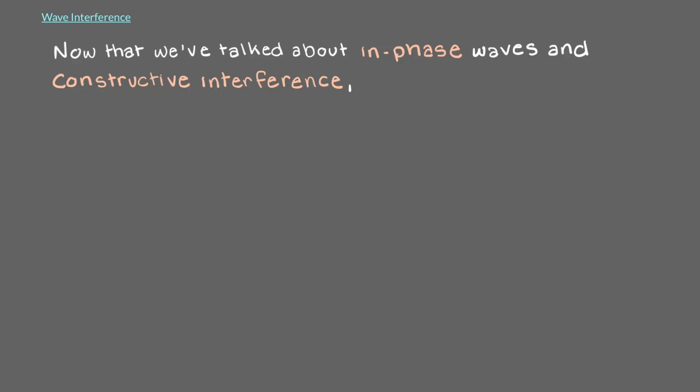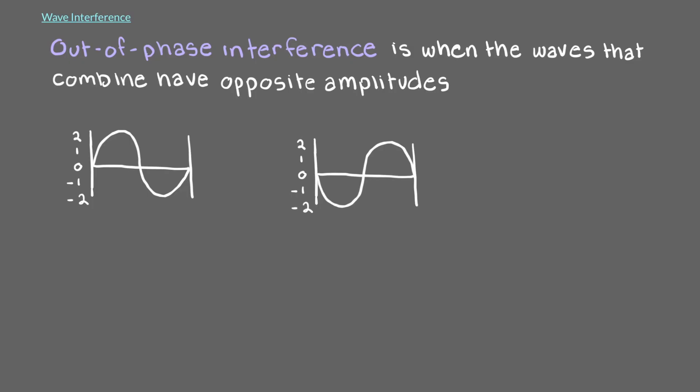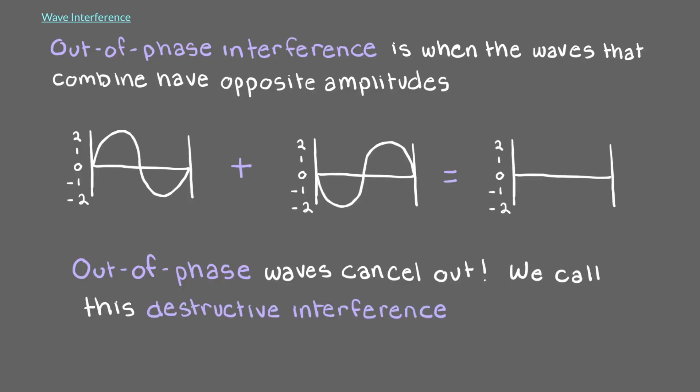Now that we've talked about in-phase waves and constructive interference, let's talk about out-of-phase waves and destructive interference. Out-of-phase interference is when the waves that combine have opposite amplitudes from each other. Instead of combining to make a single wave with a larger amplitude, out-of-phase waves cancel out. We call this destructive interference.